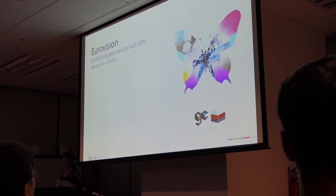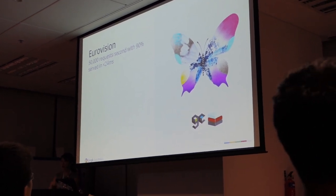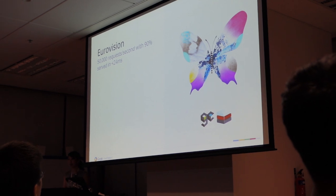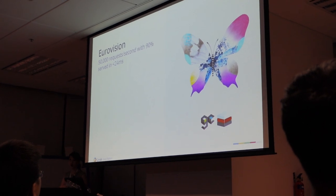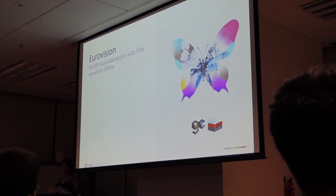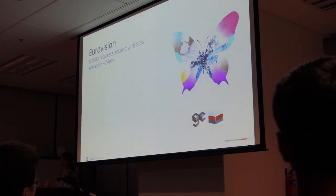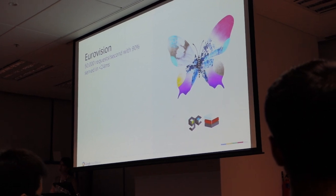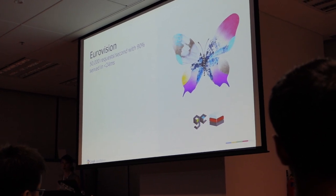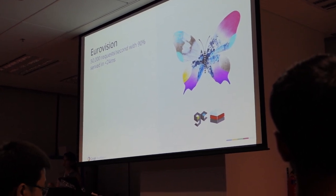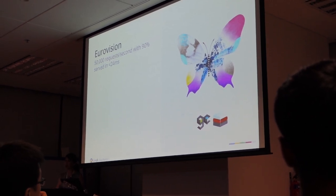We also have Eurovision. Eurovision is like the American Idol of Europe — it's a very popular song contest where viewers vote for the winner. When they say the website is live and you must vote, the amount of traffic they get is enormous — they were getting about 50,000 requests per second when the website went live. And we were able to deliver 90% of the traffic in under 24 milliseconds. I think that's pretty fast.